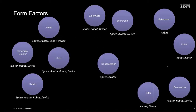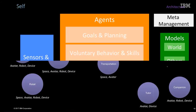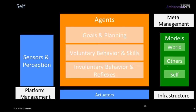If you apply those use cases and then consider the form factors, you begin to see an interesting connection. In the home, I might have the cognitive system in the walls, presented as an avatar, with a robot helping me about, or even a device. In a car, it's largely a cognitive space, but I might even have an avatar talking to me. The notion of form factors is orthogonal to the use case — you might see the same form factors show up in multiple use cases and vice versa. So the question is: how do we do that?